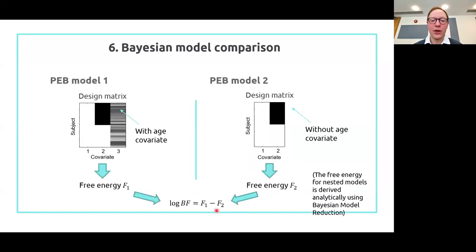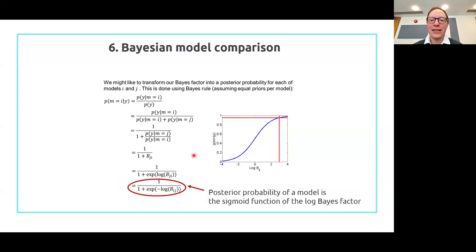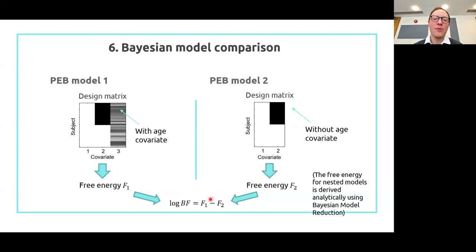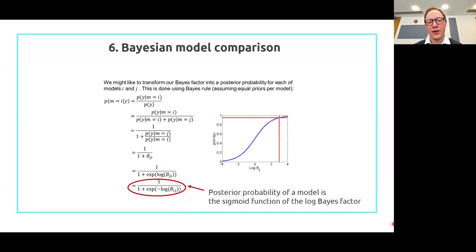We can easily go from the log Bayes factor — the difference in free energies — to a probability, which is much easier to report in your paper. There's a really simple equivalence: the log Bayes factor maps to the posterior probability that one model is better than another via a sigmoidal or softmax function. You simply plug in your log Bayes factor and get the associated probability under equal priors for the two models — meaning you treat both models as equally likely a priori before converting to a posterior probability.